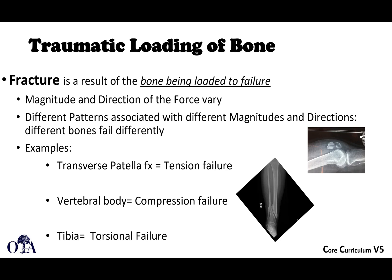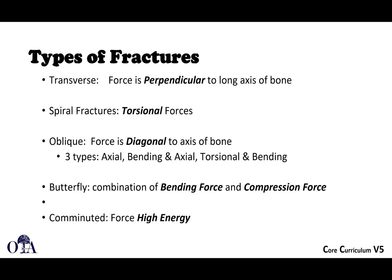Bones fail differently under typical circumstances. A transverse patella fracture is typically a tension failure. A vertebral body fracture is typically a compression failure, often called a compression fracture. A tibia fracture in this example is shown as a torsional failure. If you have rotational stresses that exceed the bone's material properties, then you can develop a fracture in that direction.